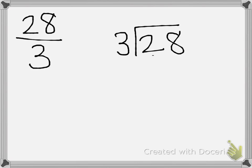3 cannot go into 2, so we'll put a 0 there. But 3 can go into 28. Think of multiples of 3: 3, 6, 9, 12, 15, 18, 21, 24, 27, 30. Well, 30 is too much, so we go back to 27 — that's not too much. That was 9 times, so 9 times 3 is 27.